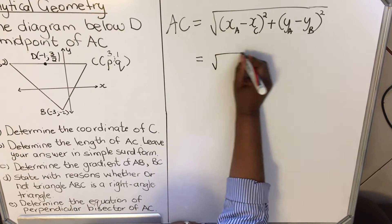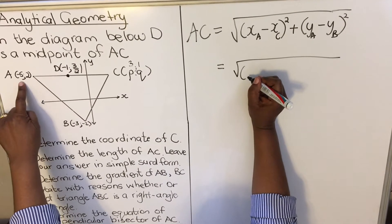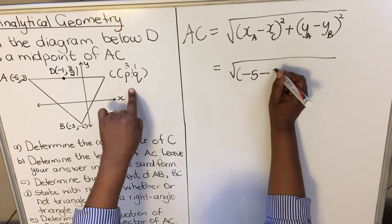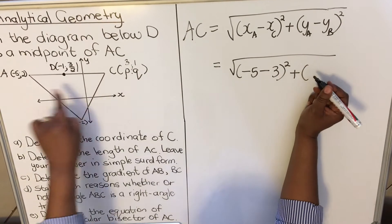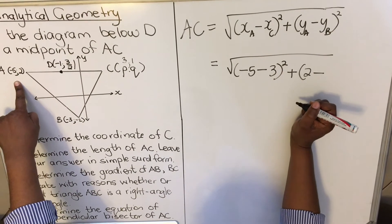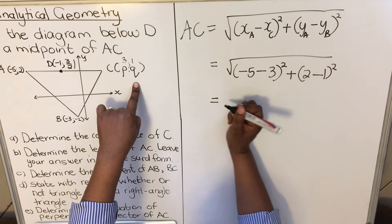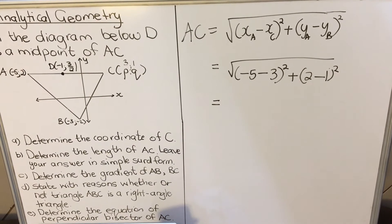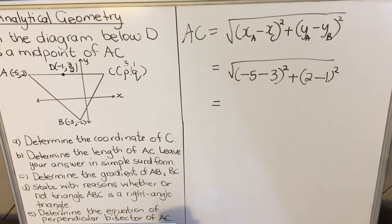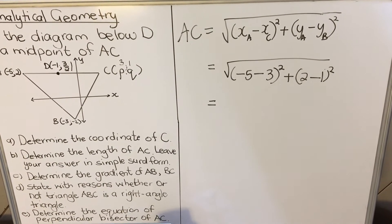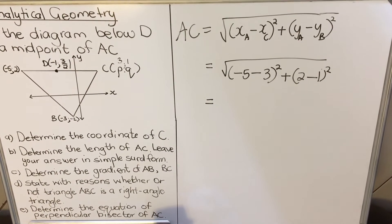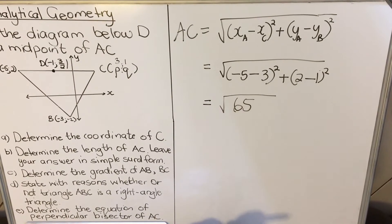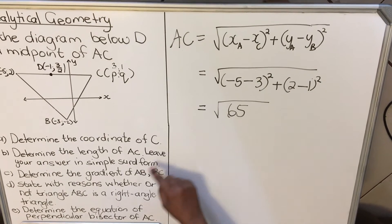The x-coordinate for A is -5 and for C is 3; the y-coordinate for A is 2 and for C is 1. Substituting: AC = √[(-5 - 3)² + (2 - 1)²]. Use your calculator: √[(-8)² + (1)²] = √65. When they say leave your answer in surd form, they mean keep the square root — don't convert to a decimal.